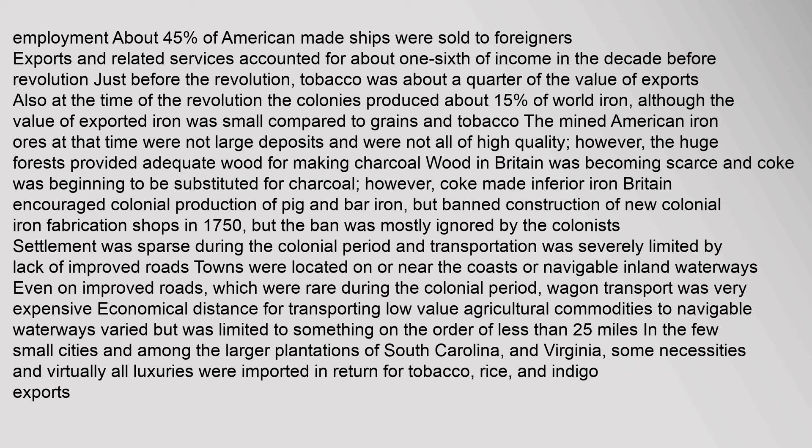Settlement was sparse during the colonial period and transportation was severely limited by lack of improved roads. Towns were located on or near the coasts or navigable inland waterways. Even on improved roads, wagon transport was very expensive; the economical distance for transporting low-value agricultural commodities to navigable waterways was limited to less than 25 miles. In the few small cities and among the larger plantations of South Carolina and Virginia, some necessities and virtually all luxuries were imported in return for tobacco, rice, and indigo exports.